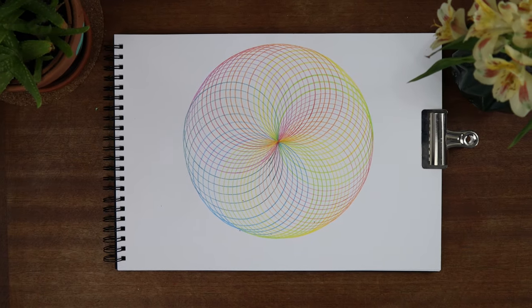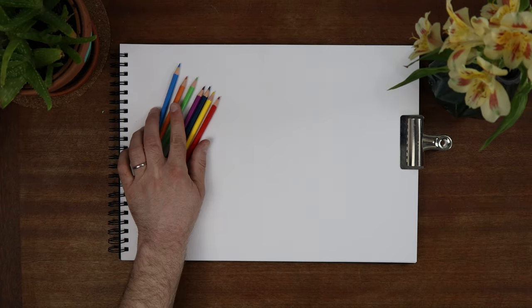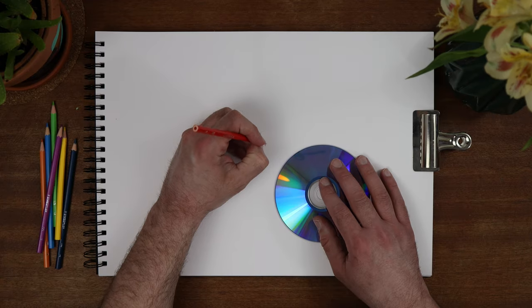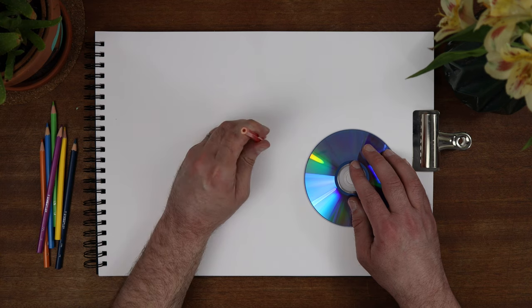This looks hard but it's actually really simple. You will need your color pencils and the same old CD or DVD. Mark a point in the center of your paper. This is your anchor point.